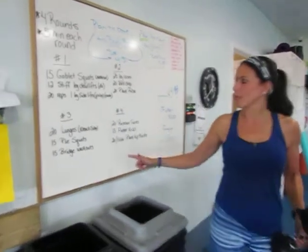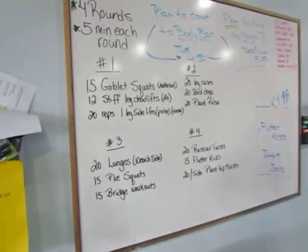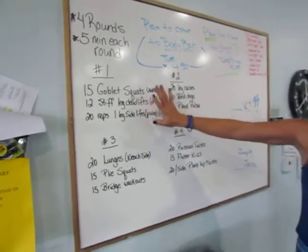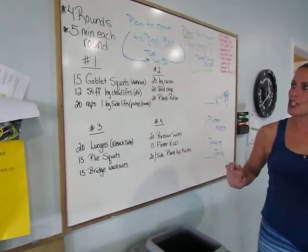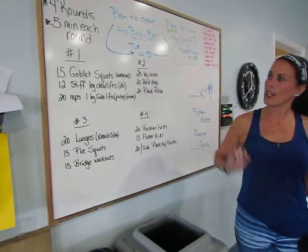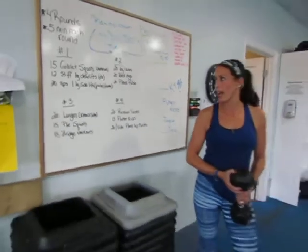Here's an example of something that we did today. We change it up every week. Today we did four rounds, five minutes each. We would do five minutes on this and then move over here working our glutes and our abs.